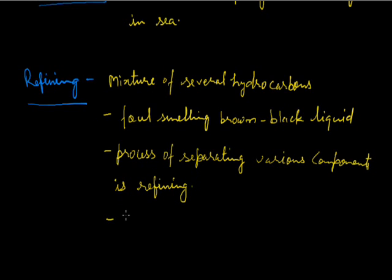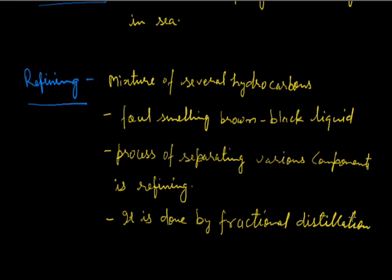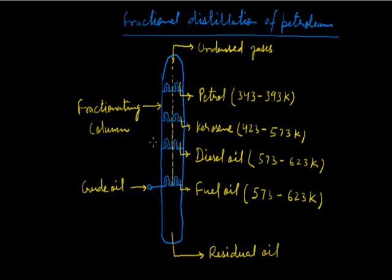And refining is done by the process of fractional distillation. The petroleum is heated to very high temperature. The principle behind the separation of various components is that various components have different boiling points, and they are distilled over because of this property. The components of petroleum are separated in a large fractionating column that can be seen in the figure.